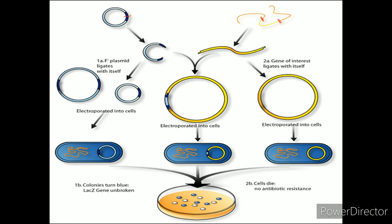Applications of Recombinant DNA Technology: Recombinant DNA is widely used in biotechnology, medicine, and research. The most common application is in basic research, where the technology is important to most current work in the biological and biomedical sciences. Recombinant DNA is used to identify, map, and sequence genes and to determine their function.